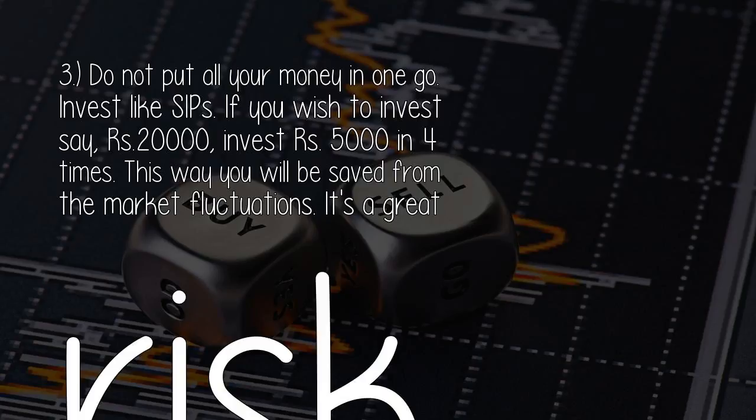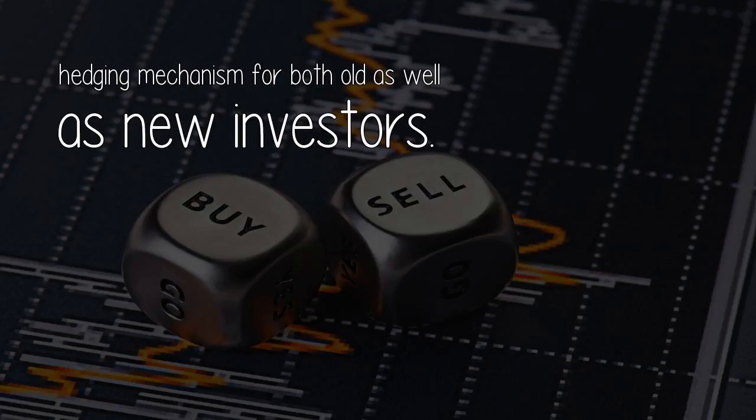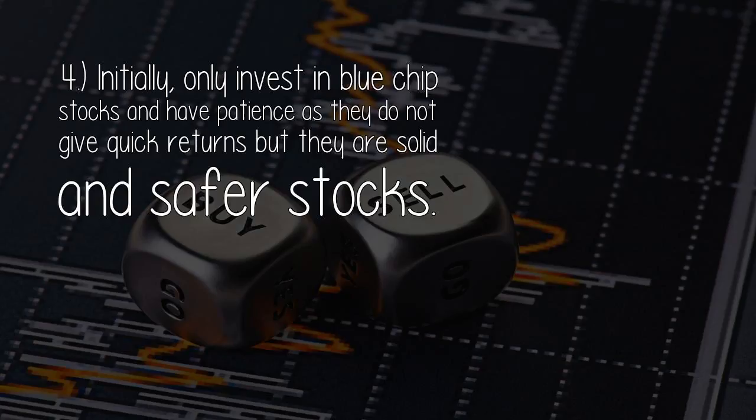Third, do not put all your money in at once. Invest like SIPs. If you wish to invest say 20,000 rupees, invest 5,000 rupees four times. This way you will be saved from market fluctuations. It's a great risk-hedging mechanism for both old as well as new investors.